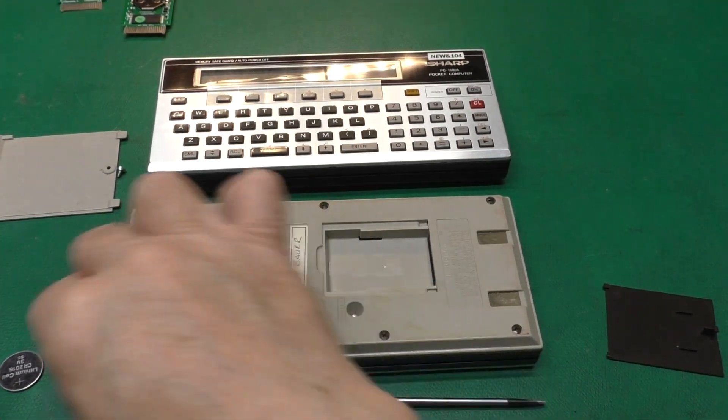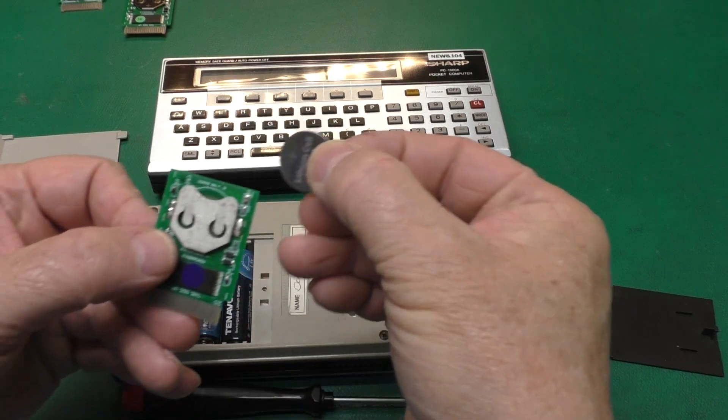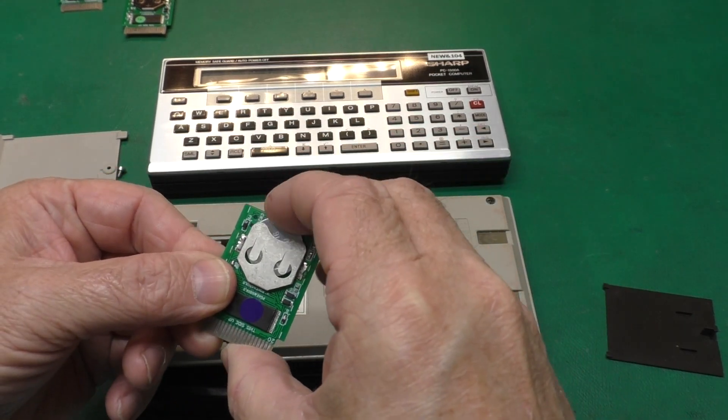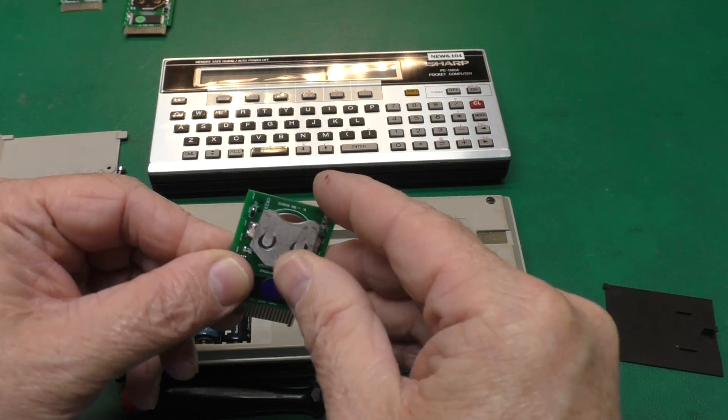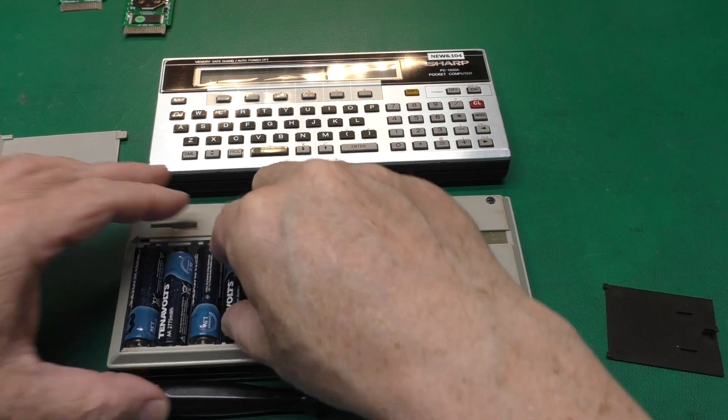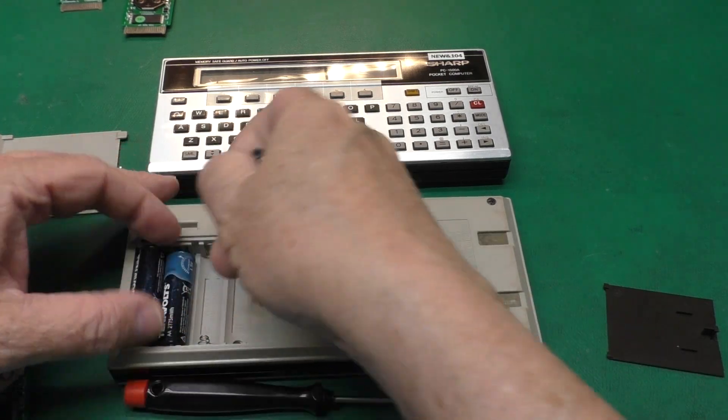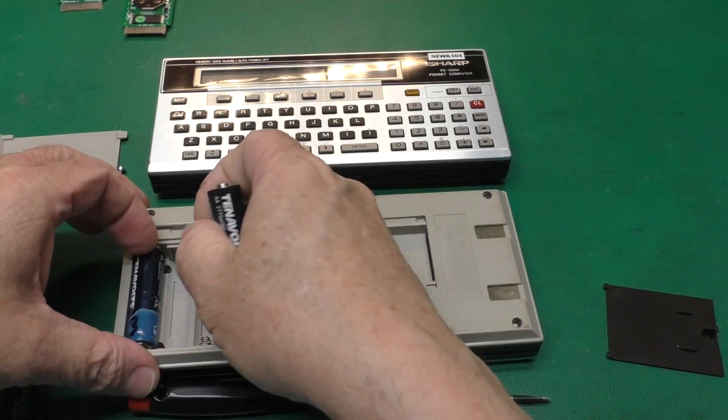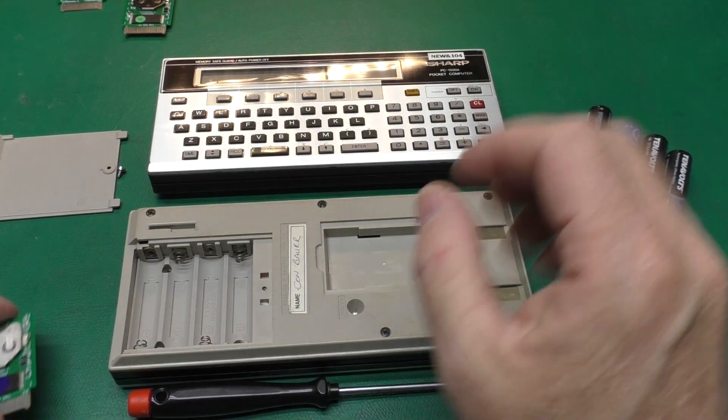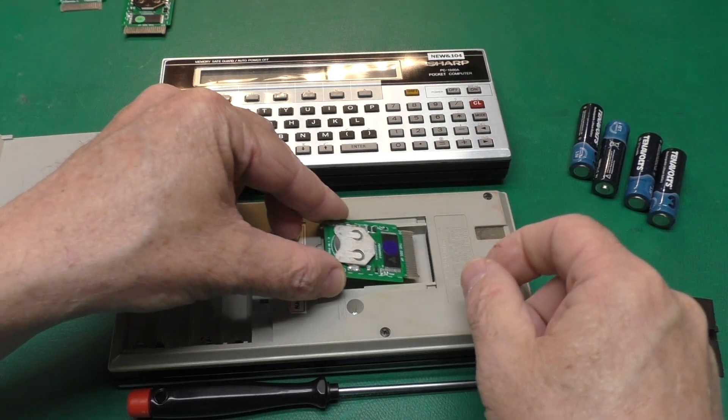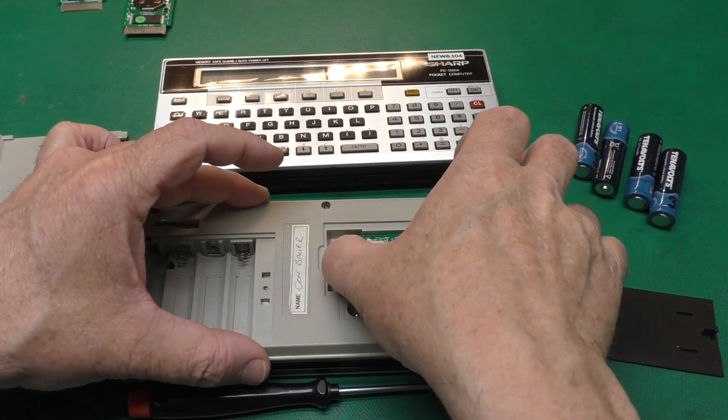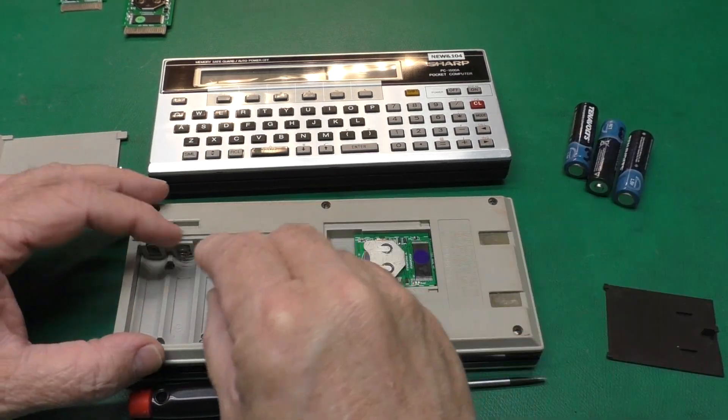Okay. You see, I've got the back off of this guy. I'm going to go ahead and slip my CR2016 battery into my RAM and flash module. This is the CE-163F, just like that. Then I'm going to take all of the batteries out of my PC-1500 here. I'm going to grab this guy like this, pop it in there, and then put my batteries back in.